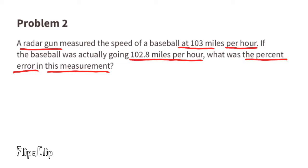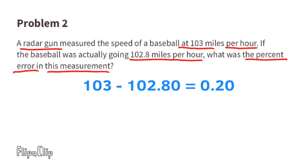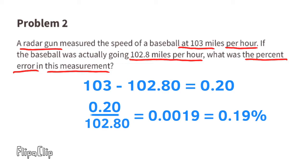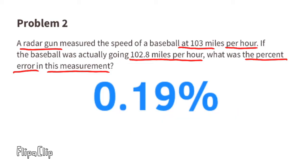If the baseball was actually going 102.8 miles per hour, what was the percent error in this measurement? The radar gun reading of 103 minus the actual speed of 102.8 gives a difference of 0.2. Two-tenths divided by 102.8 equals 0.0019, which is 0.19 percent, or nineteen hundredths percent. That is the percent error in this measurement.